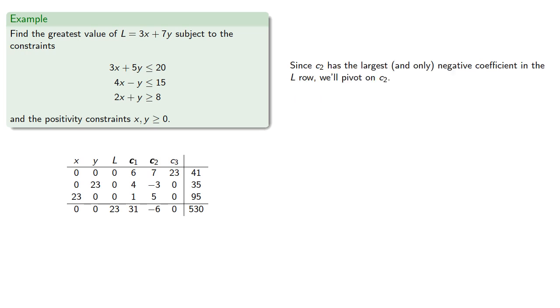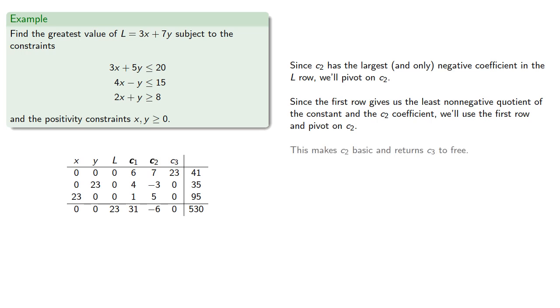Since c2 has the largest and only negative coefficient in the L row, we'll pivot on c2. And since our first row gives us the least non-negative quotient of the constant of the c2 coefficient, we'll use the first row and pivot on c2. And note that this makes c2 basic and returns c3 to being a free variable.